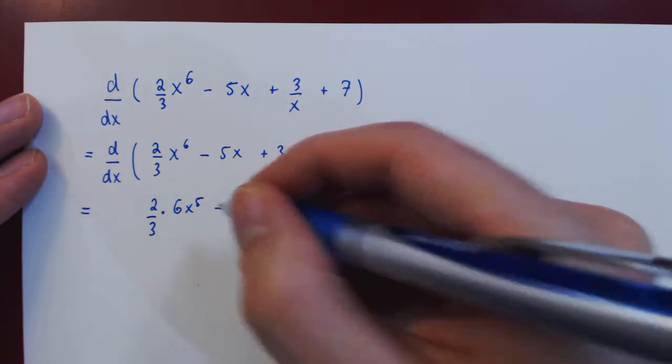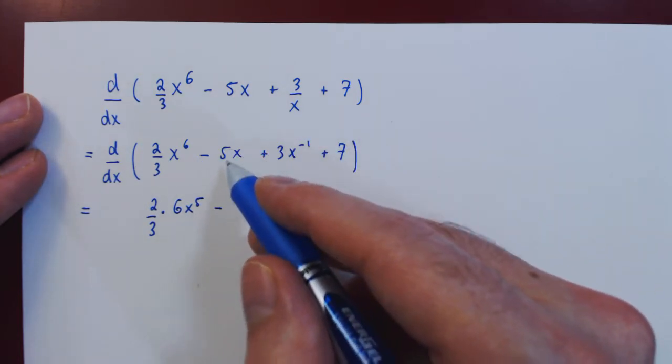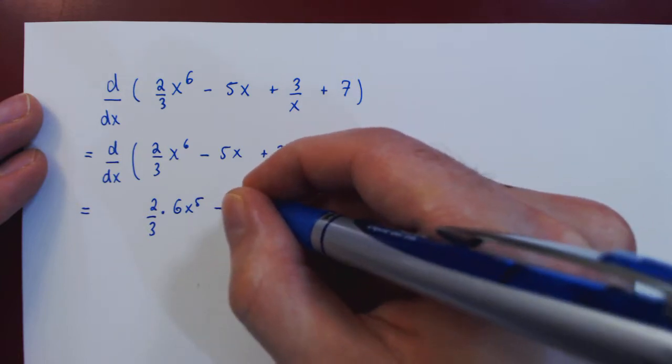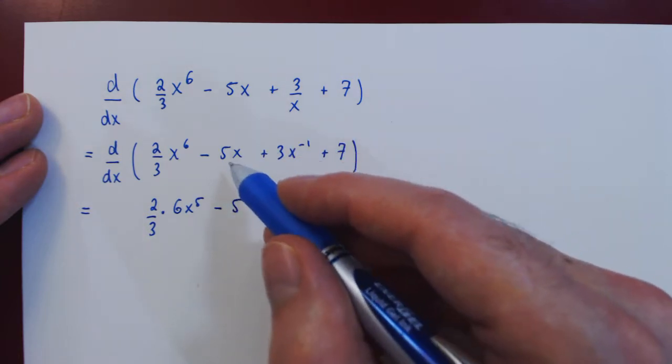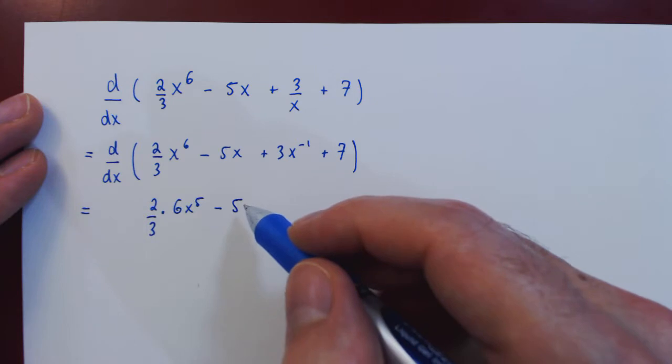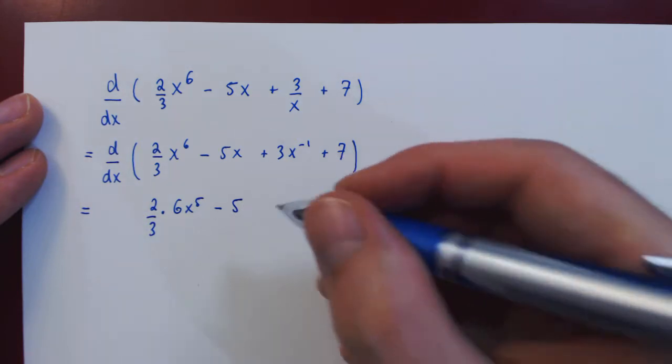Then minus, now 5 is again a constant multiple, so it stays there. Times the derivative of x, which is simply 1, so negative 5 times 1, negative 5.